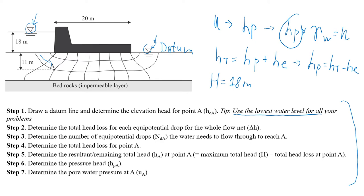Next, we need to find the elevation head for point A. The distance from the datum line to point A is 11 meters. Because point A is below the datum, the elevation head is minus 11 meters.